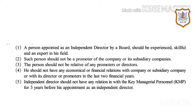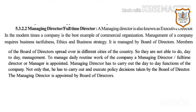A person appointed as an independent director should be experienced, skillful, and an expert in their field. They should not be a promoter of the company or its subsidiary companies. The person should not be a relative of any promoters or directors. They should not have any economic or financial relations with the company, subsidiary company, or its directors or promoters in the last two financial years. An independent director should not have any relationship with the Key Managerial Personnel (KMP) for three years before their appointment as an independent director.